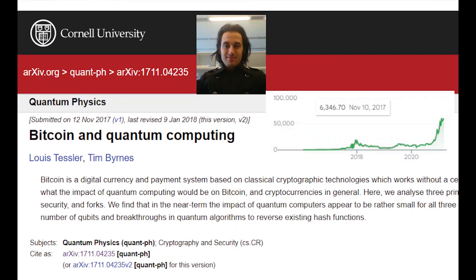In 2017, when Bitcoin prices were reaching their second bubble, an ex-student of mine, Lewis Tesla, decided that it would be a good idea to do a project on examining the vulnerabilities of Bitcoin and quantum computing. So we released this paper on the archive in late 2017, and we were quite early in the game for this paper.